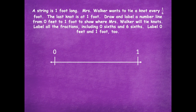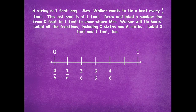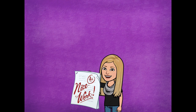We already have our endpoints of zero and one, and we're splitting this into six equal parts. There's one equal part, two equal parts, three equal parts, four equal parts, five equal parts, and six equal parts. Label these as zero sixths, one sixth, two sixths, three sixths, four sixths, five sixths, and six sixths to represent one whole. Nice work!